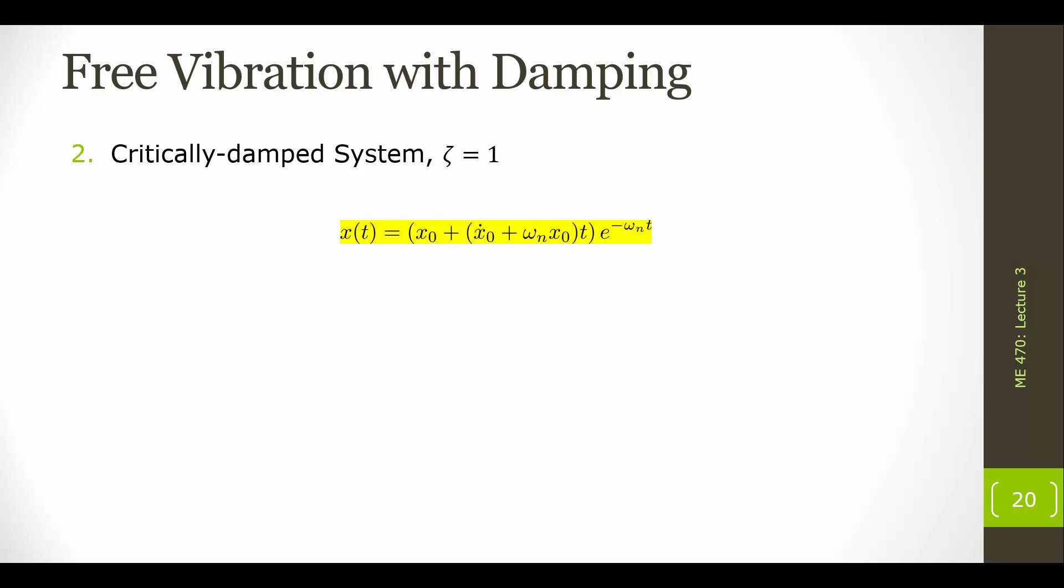Now, with a critically damped system, we see that the form of our solution has an exponential that is going to decay over time. As t goes to infinity, this term is going to go toward 0, meaning that x(t) is also going to go to 0. We have this extra t appearing here, which is going to come from that solution to the ODE when we have repeated roots.